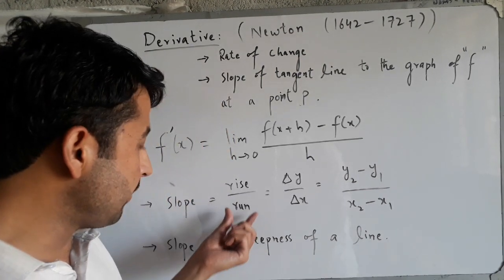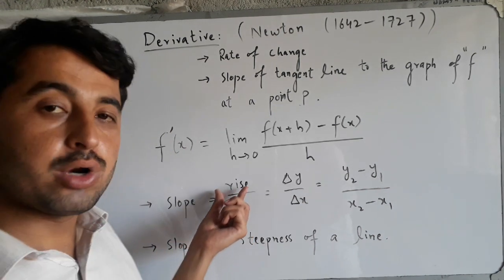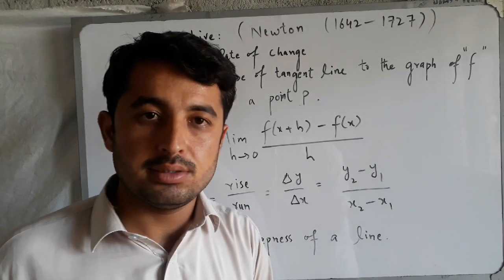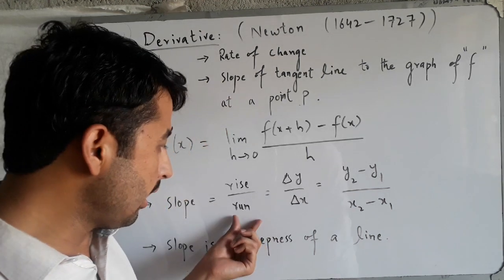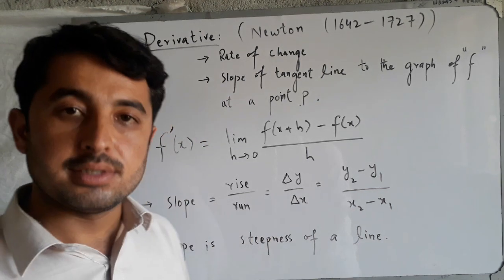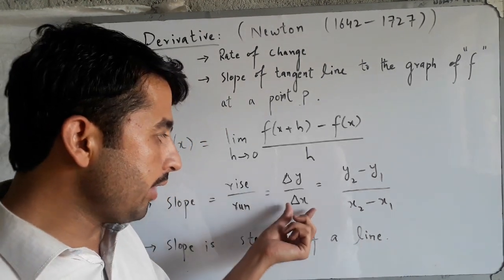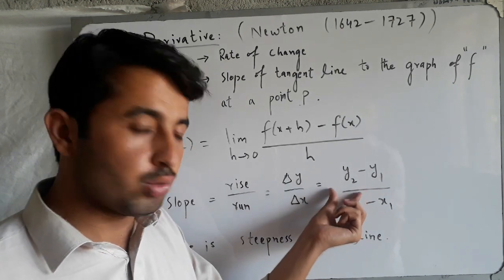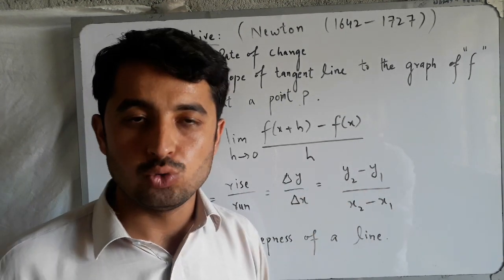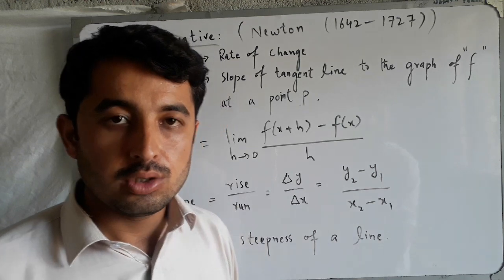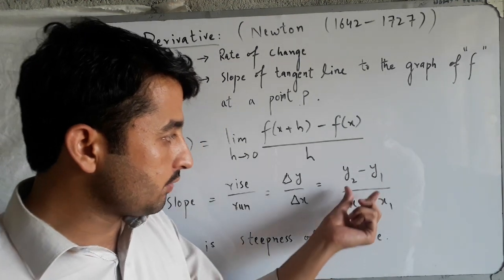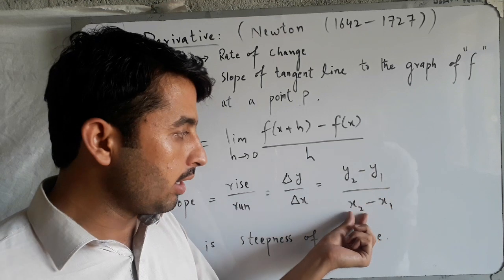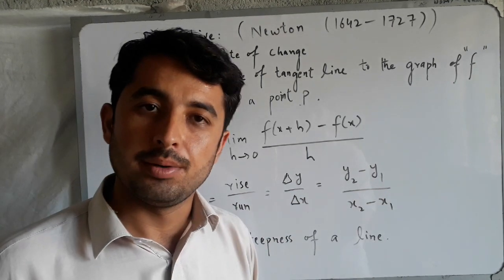Slope ka jo mathematical form hai: slope is equal to rise over run — distance along the y-axis divided by distance along the x-axis, i.e., Δy divided by Δx. If we have two points (x1, y1) and (x2, y2), then slope can be found by the formula: (y2 − y1) divided by (x2 − x1).